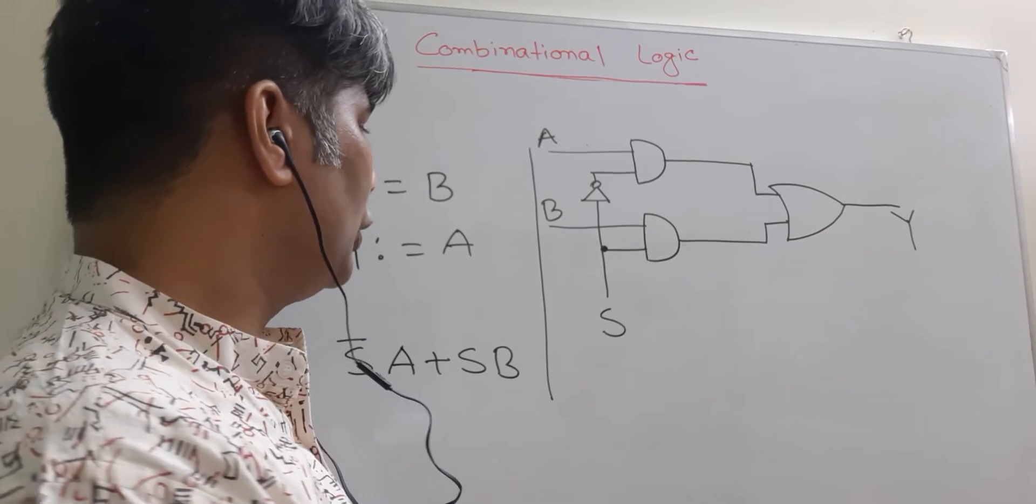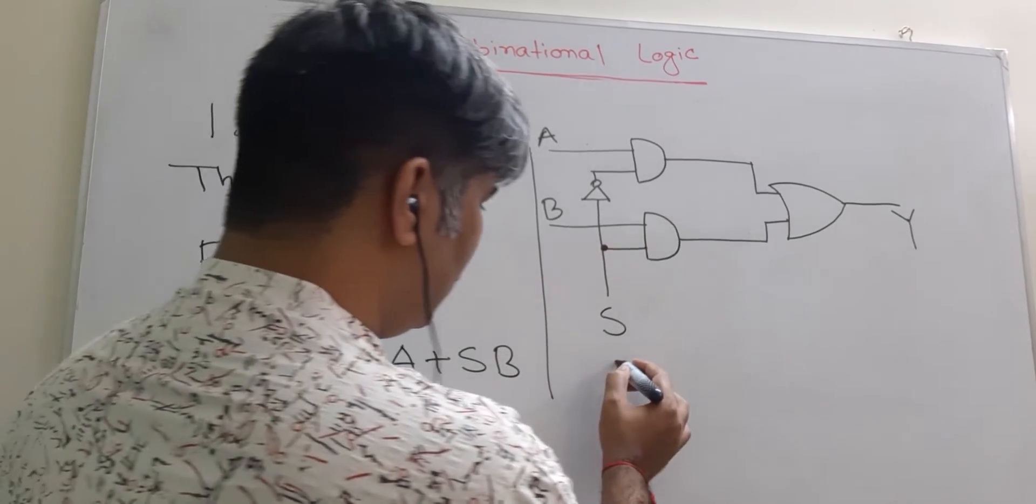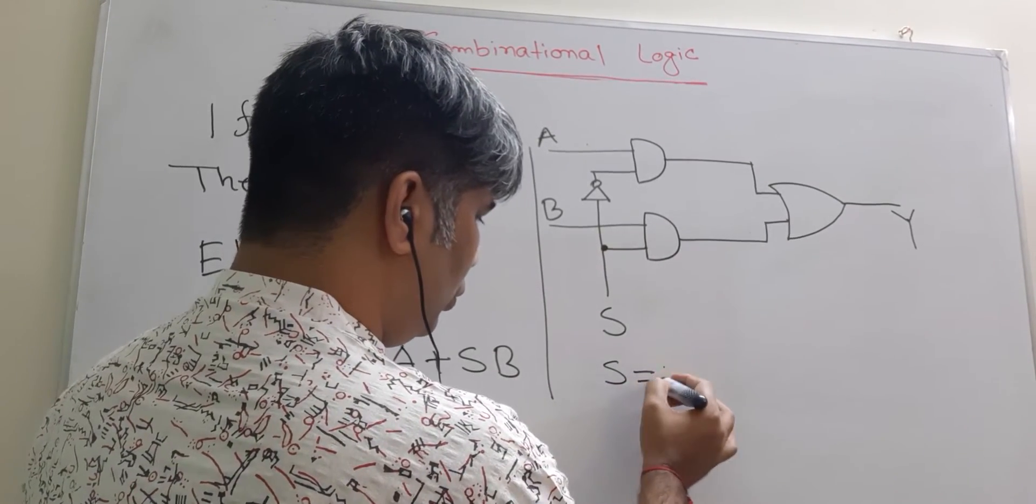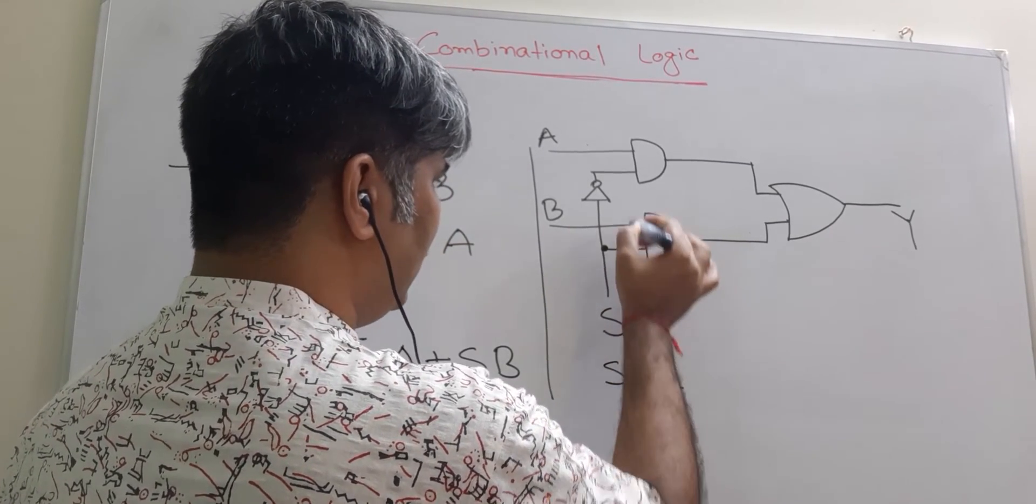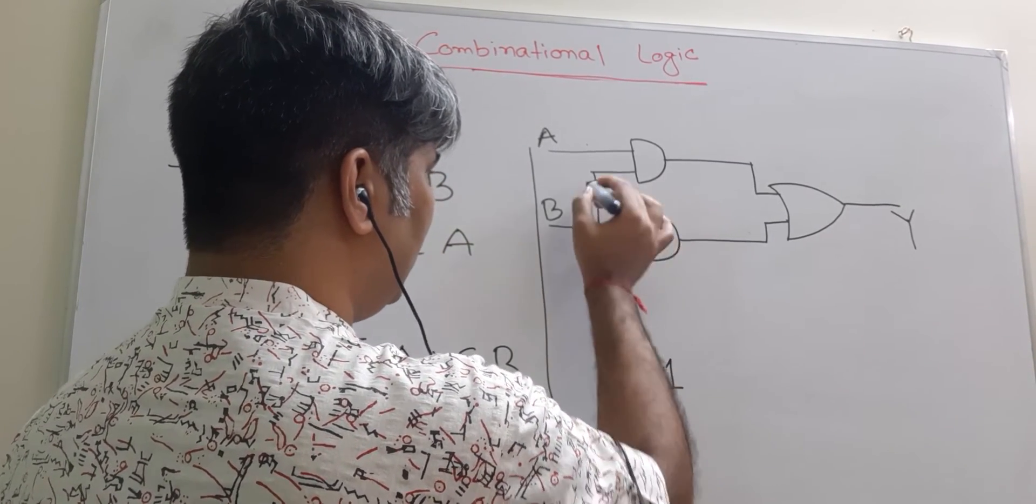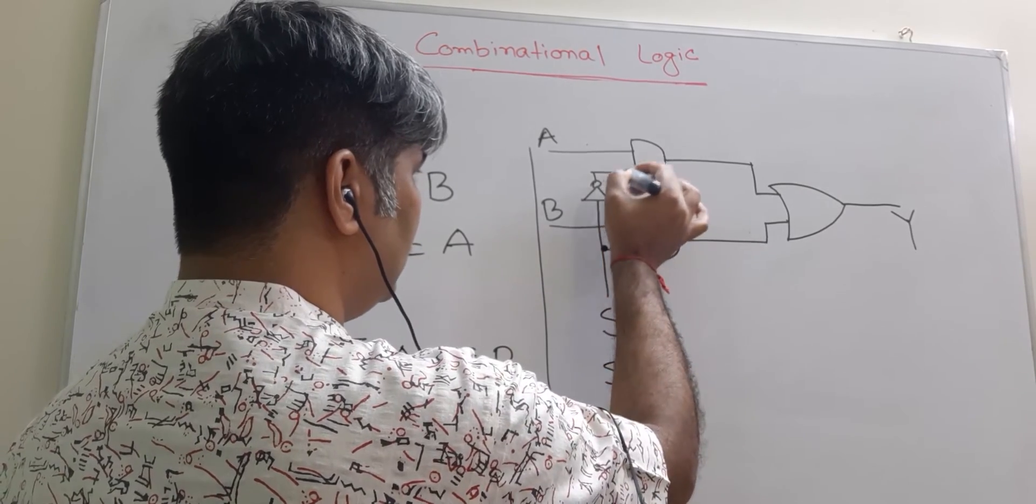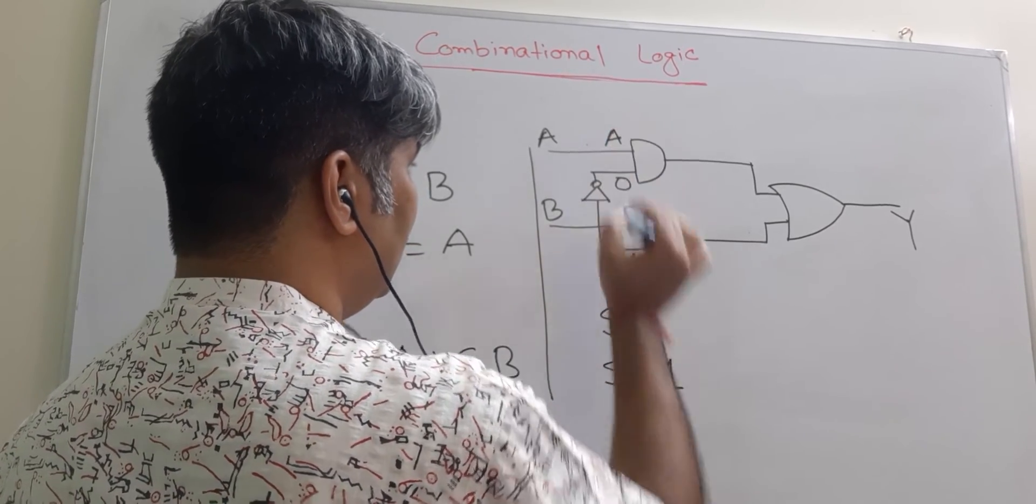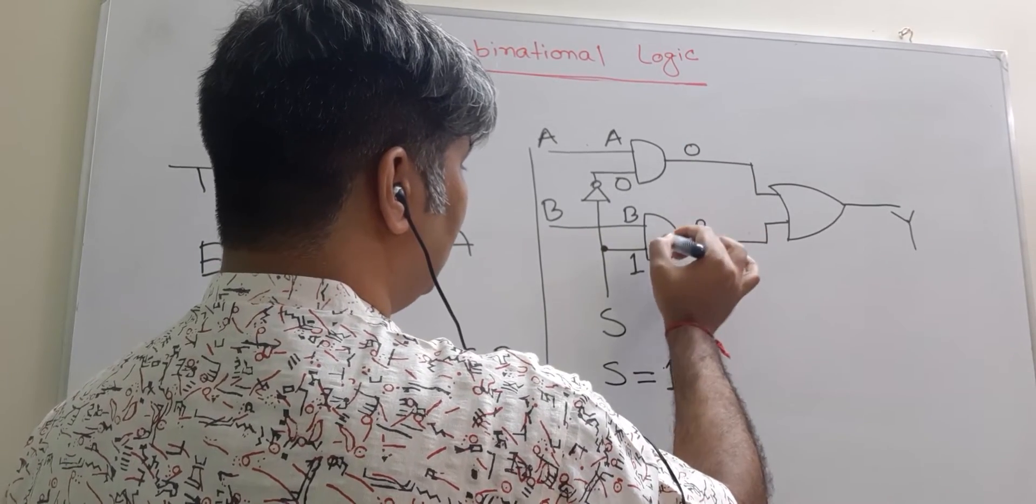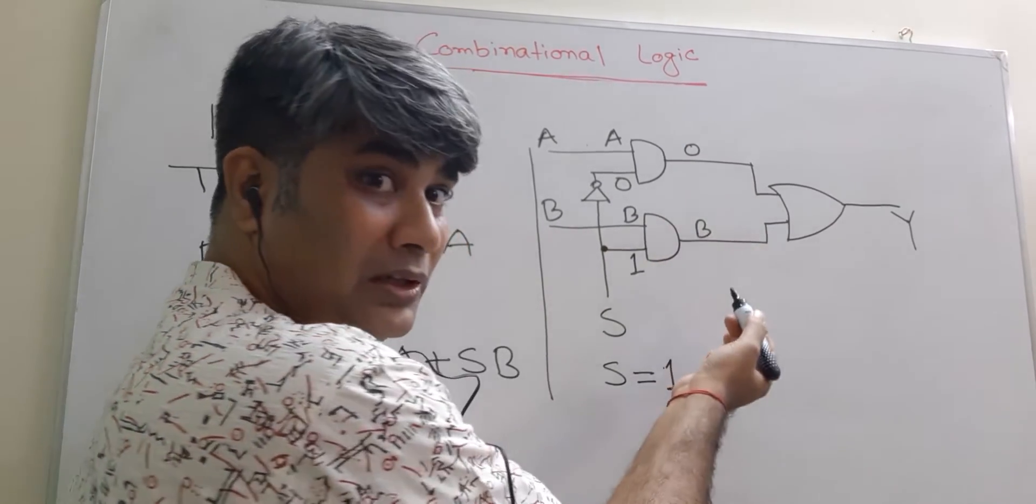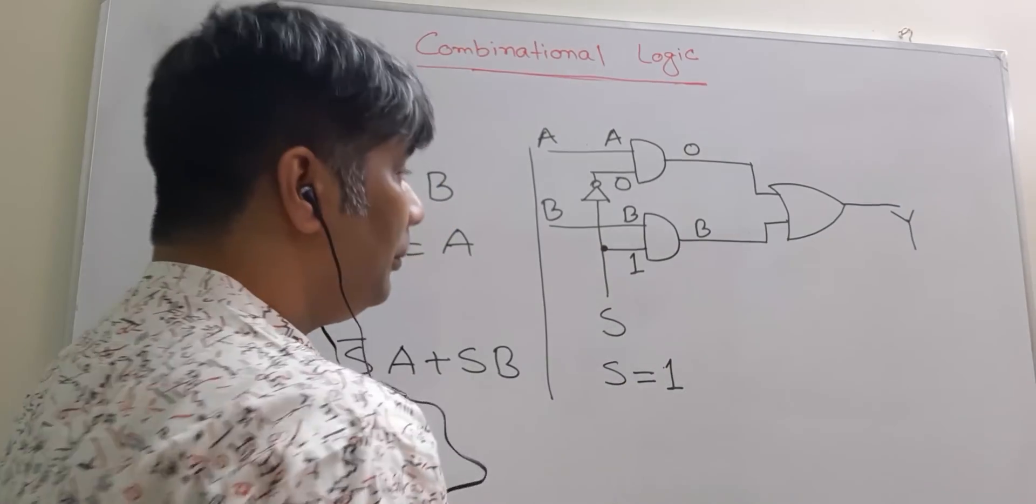Now you can see that when A is equal to one, which means you have one here, you have B here, and so this one is zero and this one is A, which means zero is coming here and B is coming out from this one, which means the output is B.